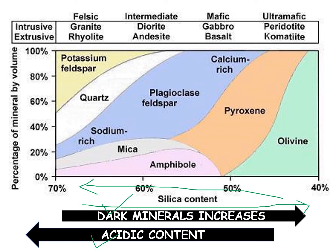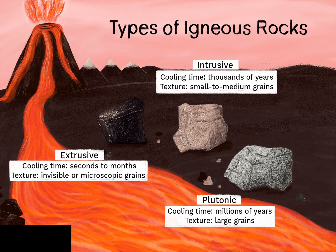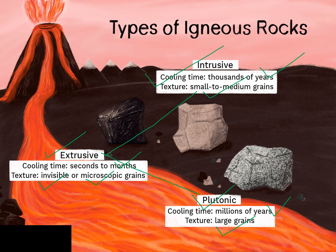I hope you enjoyed the lecture. To conclude: intrusive igneous rock has a cooling time of thousands of years with small to medium grain texture; extrusive igneous rock takes seconds to months to grow and the texture is invisible and microscopic in nature; while the plutonic igneous rock takes millions of years and has a very large grain texture. These are the three types of difference you can find in different kinds of igneous rock. I hope you enjoyed the lecture and have a nice day.